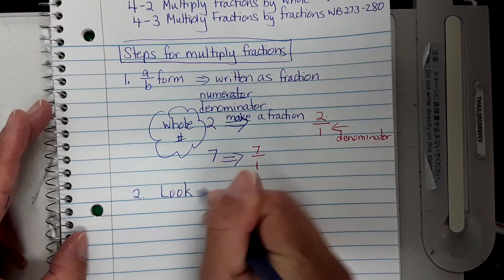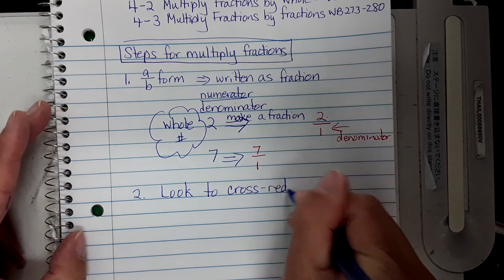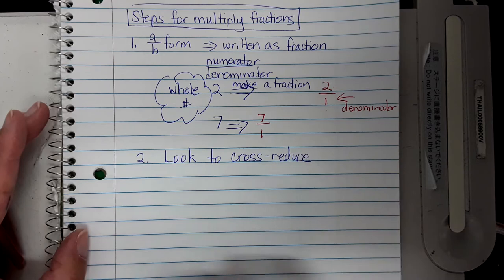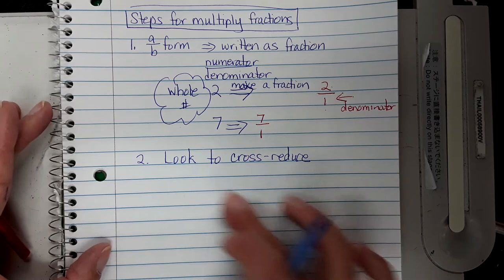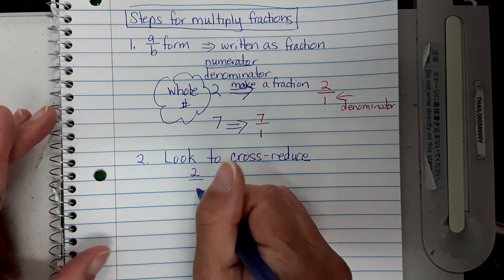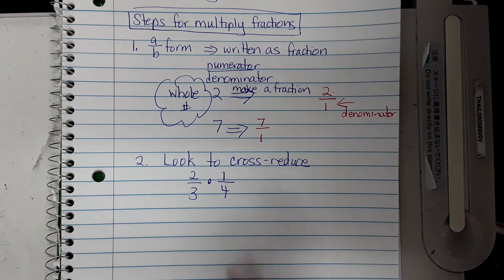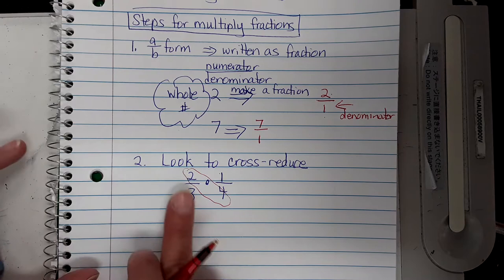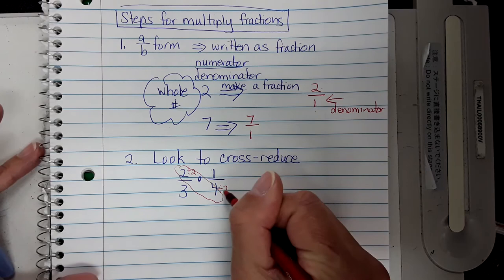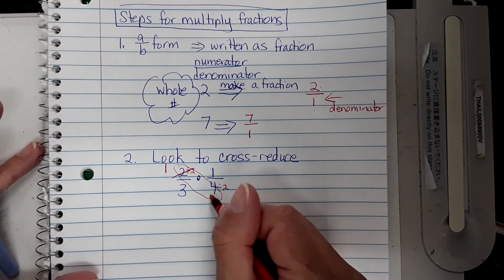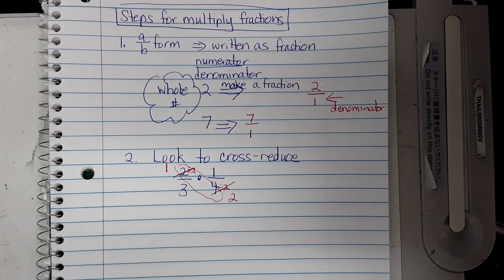Step two: look to cross-reduce. When cross-reducing, you're reducing crosswise. For instance, if I had 2 over 3 times 1 over 4, look diagonally — both 2 and 4 can be divided by 2. So 2 divided by 2 becomes 1, and 4 divided by 2 becomes 2. Then use those new numbers to multiply.